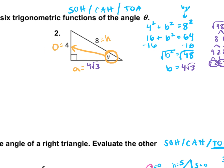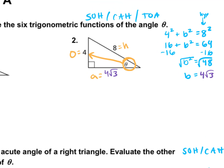Let's find our six trig functions, starting with sine. Sine is opposite over hypotenuse, so that's 4 over 8. Can this be simplified? Yes — to 1 over 2.